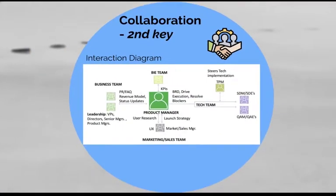Moving on to the second key, which is collaboration. Throughout the product development lifecycle, a PM collaborates with multiple stakeholders, namely tech teams, which generally consists of SDMs, SDEs, QAEs, QAM, and TPM. Business teams consisting of vice presidents, directors, senior managers, and other product managers. Then the third team is the operations team, followed by the marketing team and the BI team. Out of these, the tech and the business teams are the core teams with which the PM interacts.